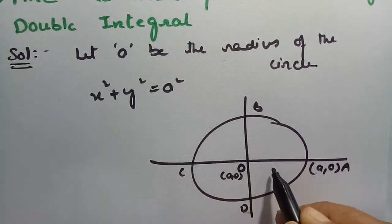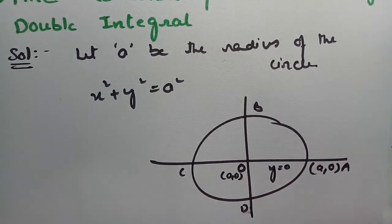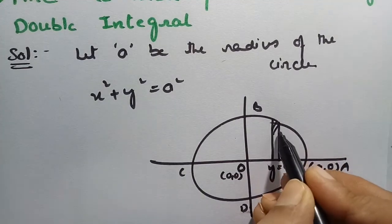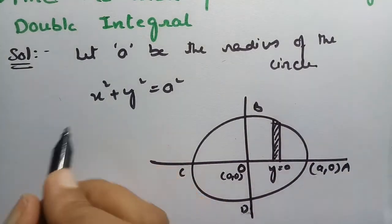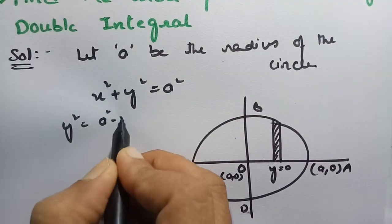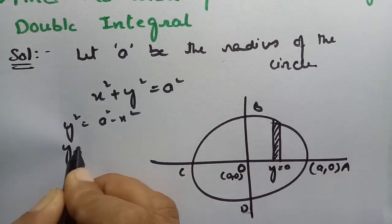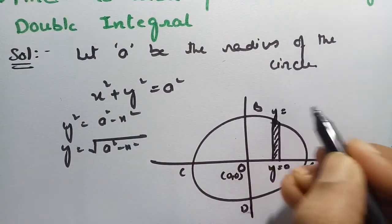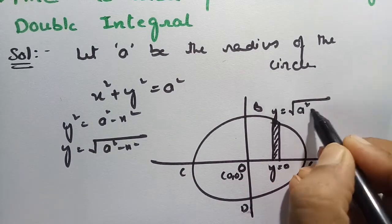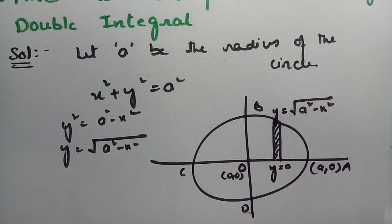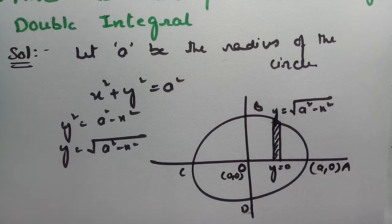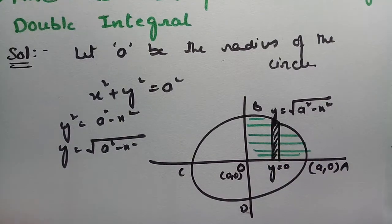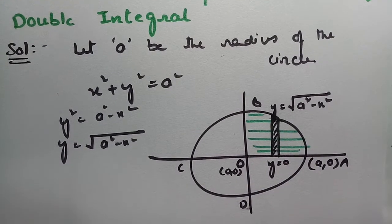Observing the figure: y = 0 is the x-axis and x = 0 is the y-axis. We consider a small strip here. From the circle equation, y² = a² − x², so y = √(a² − x²). This is the equation in terms of y, and this is the region in which we have to find the area of the circle.